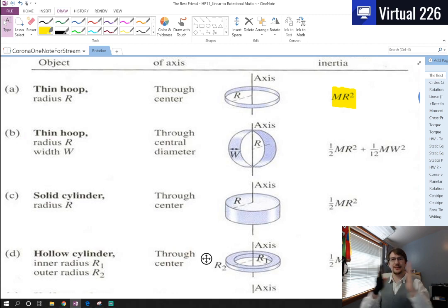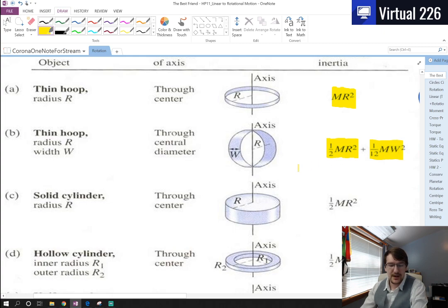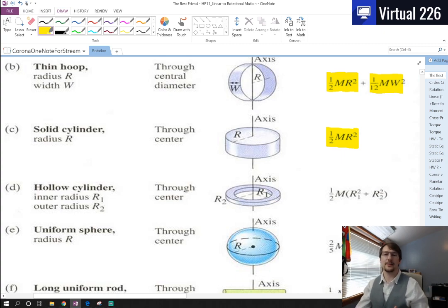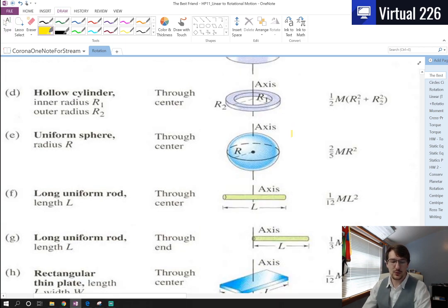We've got all sorts of other shapes here. If you have a thin hoop that has some thickness to it, we'd have one-half MR² plus this extra 1/12 term. Things we'll more often use are cylinders, which are one-half MR². Those are very nice for us. Cylinders are solid objects like an entire cheese wheel. We're not going to be talking about hollow cylinders too often.